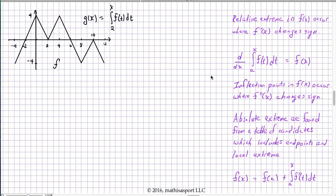The most significant thing to understand in this free response question is the relationship between the graph that's given and the questions being asked. Namely, this is a graph of F, not a graph of G. G is defined as the signed area underneath this graph starting at 2. That means questions about G prime of X are really questions about F, and questions about G double prime of X are questions about F prime.